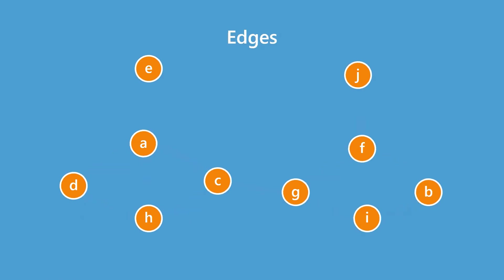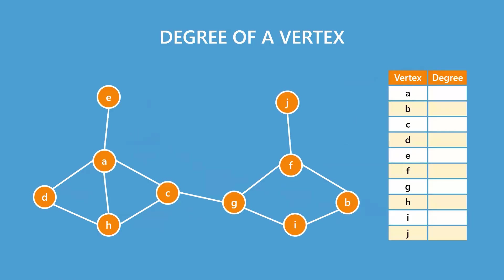The number of edges connected to each vertex is known as the degree of a vertex. Since there are four edges attached to A, then the degree of A is 4.